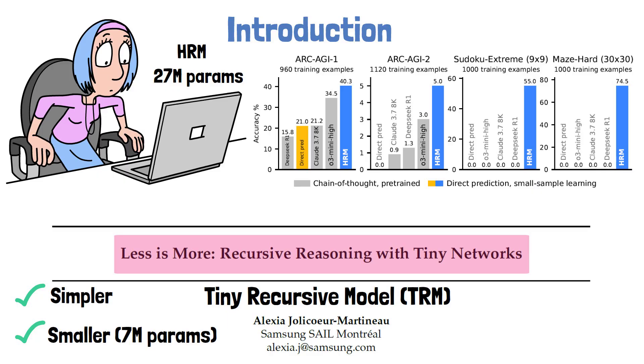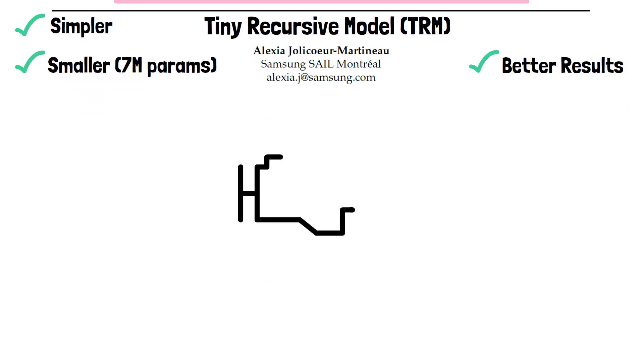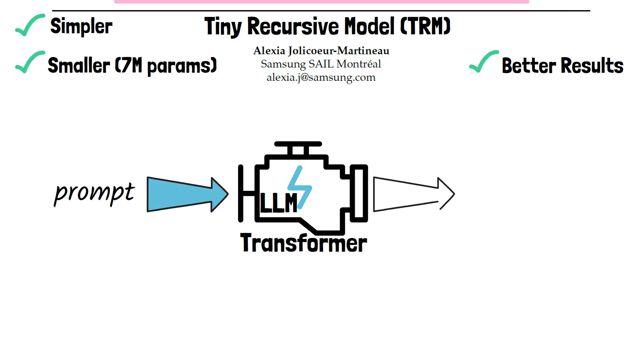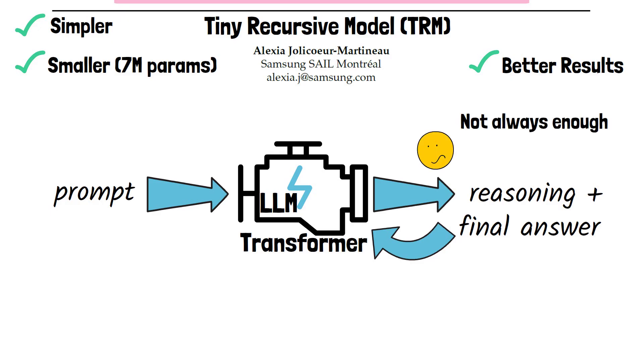With a simpler architecture, Tiny Recursive Model achieves significant improvements over the Hierarchical Reasoning Model. As a quick reminder, current transformer-based large language models rely on chain-of-thought reasoning. Given an input prompt, the model generates tokens that represent its reasoning process, which are fed back into the model and repeated until it produces a final answer. However, sometimes that's not enough. For example, on ARC-AGI 2, Gemini 2.5 Pro achieves only 4.9% accuracy. Additionally, generating long chain-of-thought traces comes with a cost. Many forward passes with a growing context window make the process slow and expensive.